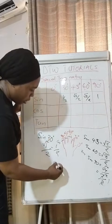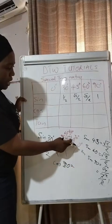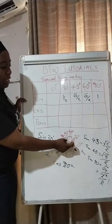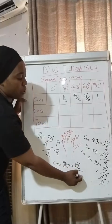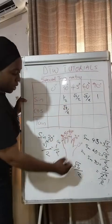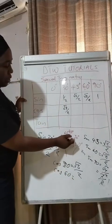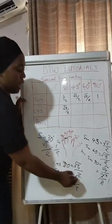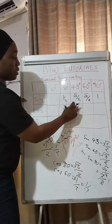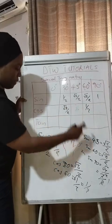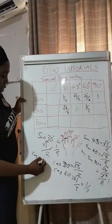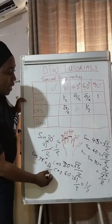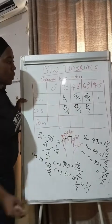Now let's do cosine values. For cosine, the fingers to the LEFT are what you count. For cos 30, fold the 30-degree finger — you have three fingers to the left, so cos 30 = √3 / 2. For cos 60, fold that finger — one finger to the left, so cos 60 = √1 / 2 = 1/2. For cos 45, fold that finger — two fingers to the left, so cos 45 = √2 / 2.